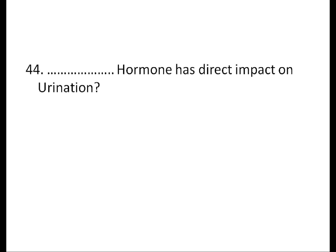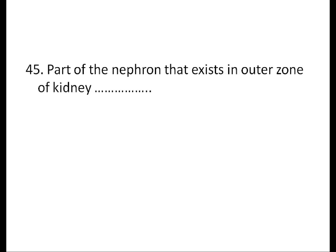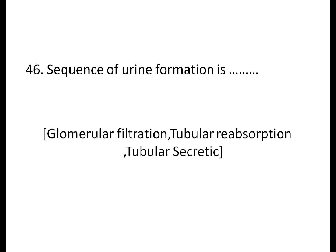Which hormone has a direct impact on urination? Vasopressin. The part of the nephron that exists in the outer zone of the kidney is the DCT. The sequence of urine formation is: glomerular filtration, tubular reabsorption, and tubular secretion.